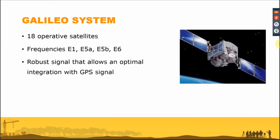The fourth system is Galileo, the European constellation operating since 2016. It currently consists of 18 satellites and provides signals E1, E5a, E5b, and E6. It has been designed for perfect integration with GPS and GLONASS systems, and has a robust signal design that supports this integration.